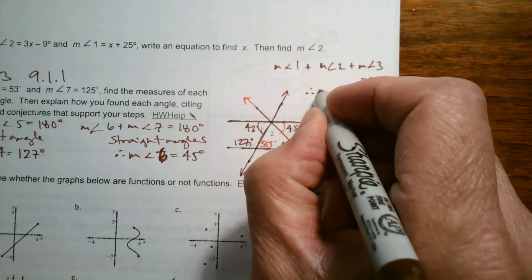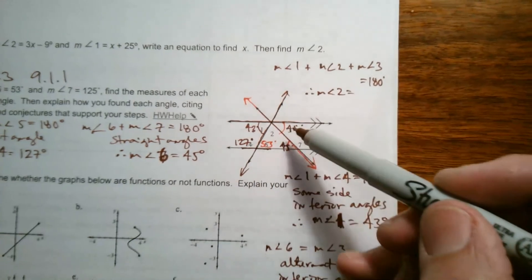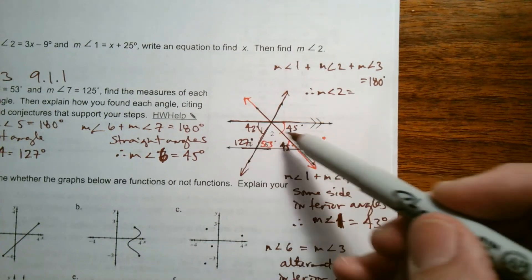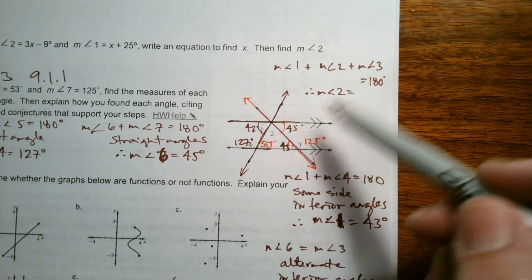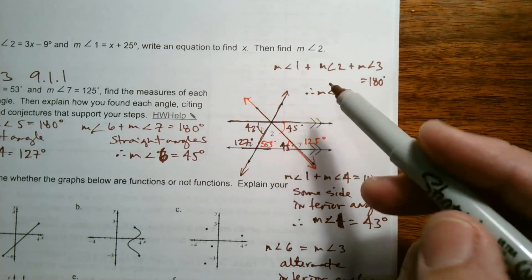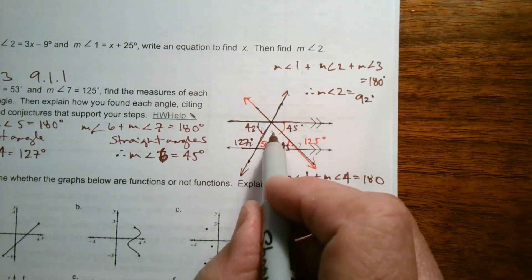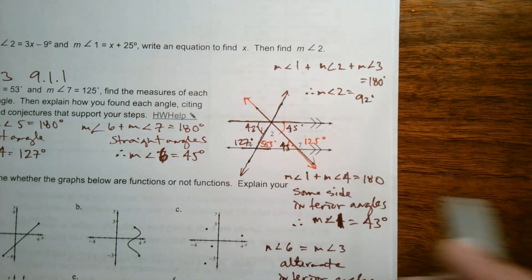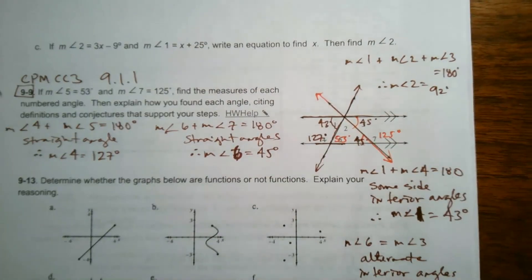So, that being said, I can then figure out my last one, which is angle 2. I would take 45 and 53, add those up, you get 98. So, then 180 minus 98 is 82. So, that means measure of angle 2 is 82 degrees. I think I got them all. There we go.